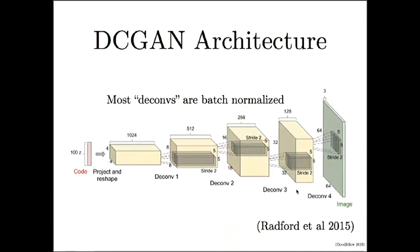The modern generative adversarial network architectures are based on a paper called Deep Convolutional Generative Adversarial Networks, or DC-GANs, written by Alec Radford and Luke Metz at Indico and Soumith Chintala at Facebook AI Research. The basic idea of the DC-GAN architecture is to use several layers of deconvolution — which is kind of like convolution but run backwards — the same operation used during backpropagation to train a supervised convolutional network.